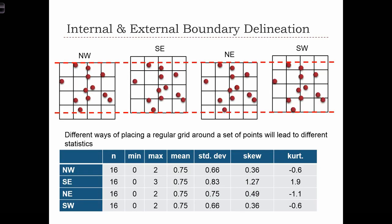The internal and external boundaries that we place over our data set can impact our descriptive statistics of that data set. In this example of quadrat analysis, a point pattern technique we are going to learn later, we are investigating the presence of cholera outbreaks across the city. Each dot represents a case of cholera, and we are tasked with placing a regular grid over the study area and counting how many cholera outbreaks are in each grid cell. Here we have a 4x4 grid, and the variable of interest is how many cholera outbreaks there are in each grid cell.